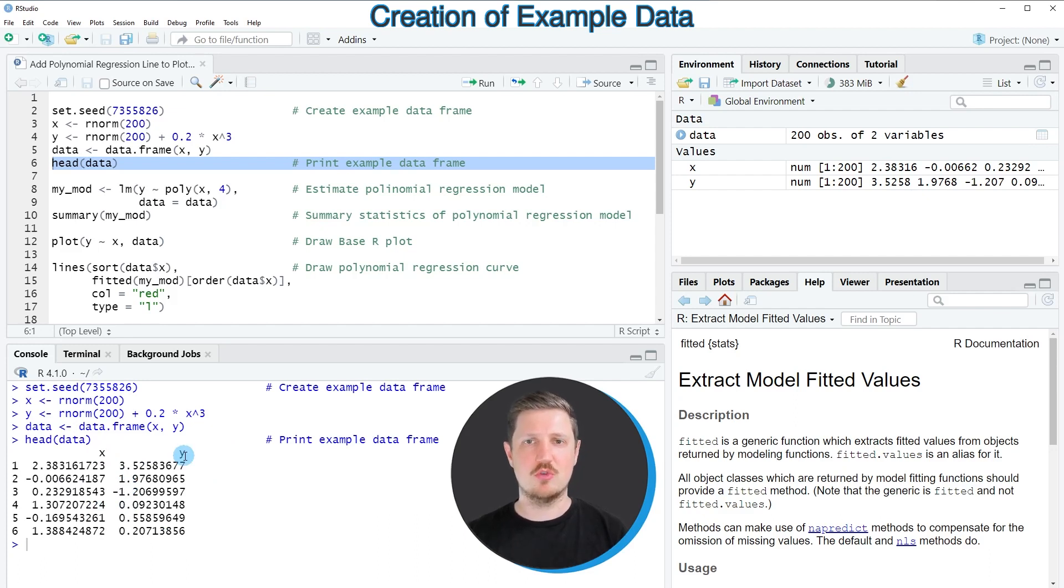Now in the next step we need to estimate a polynomial regression model based on these data using the lm and the poly functions as you can see in lines 8 and 9 of the code. And I'm storing the output of the lm function in a new data object that I'm calling mymod.